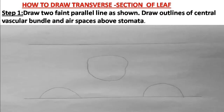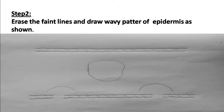Now we will learn how to draw the transverse section of a leaf. Step one: draw two parallel lines. In the middle — the mid rib — draw the vascular conducting bundle representing xylem and phloem. Then draw a circle for the lower epidermis along the lower parallel line. Draw the stomatal opening for the air cavity. Step two: erase the straight lines and replace them with wavy epidermal cells.